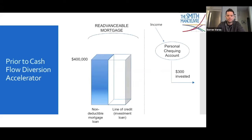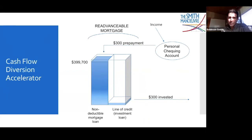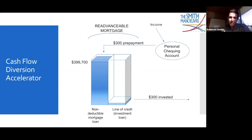The second accelerator is cashflow diversion. People get paid income into their personal checking account and may already invest $300 a month directly from it. But what they can do instead is first take that $300 and make a prepayment against their mortgage above and beyond the regular payment, then borrow that $300 back and get it invested. So the same $300 is not only getting invested, it's also reducing the amortization of your mortgage and generating additional tax deductions.